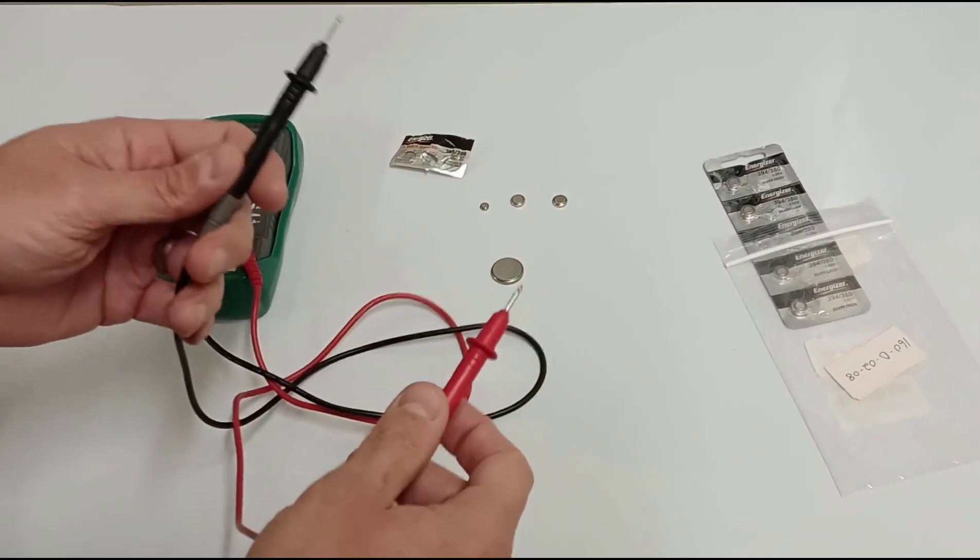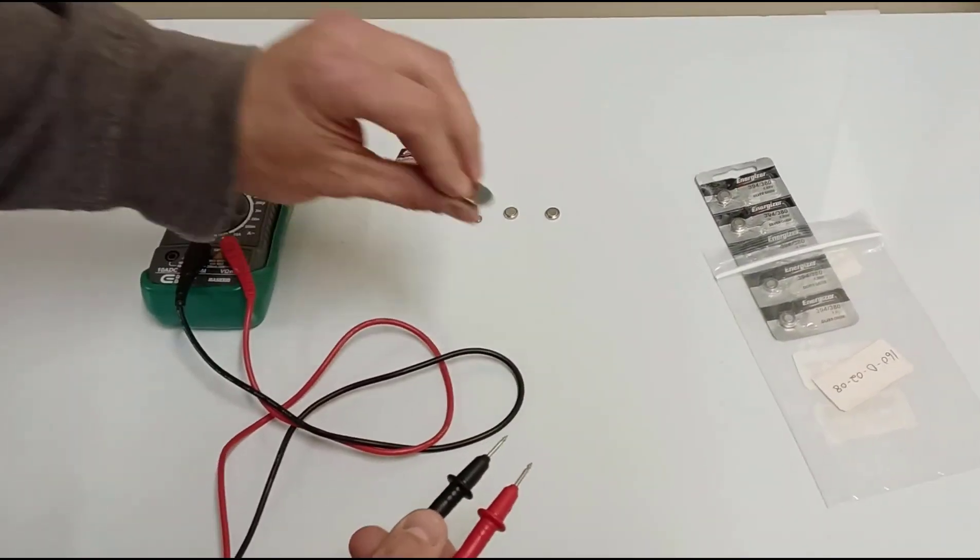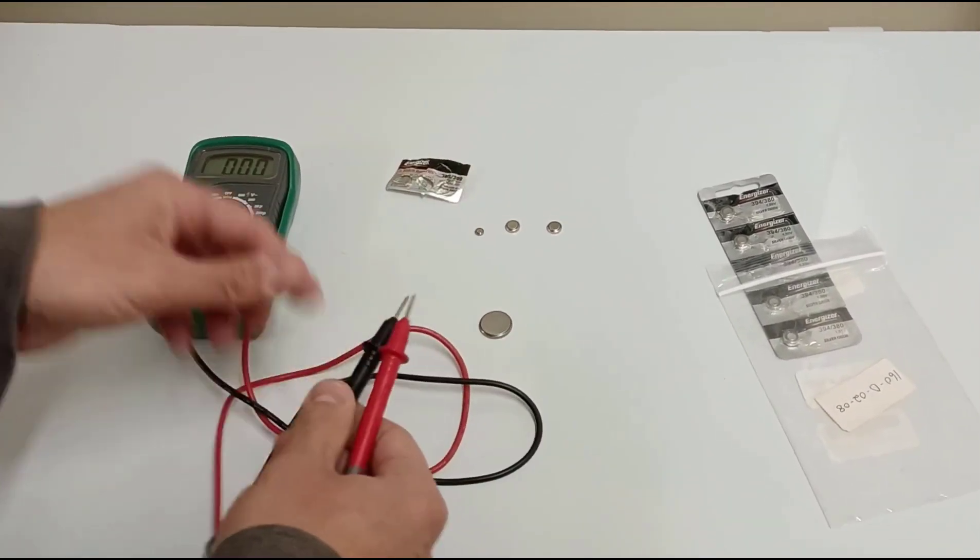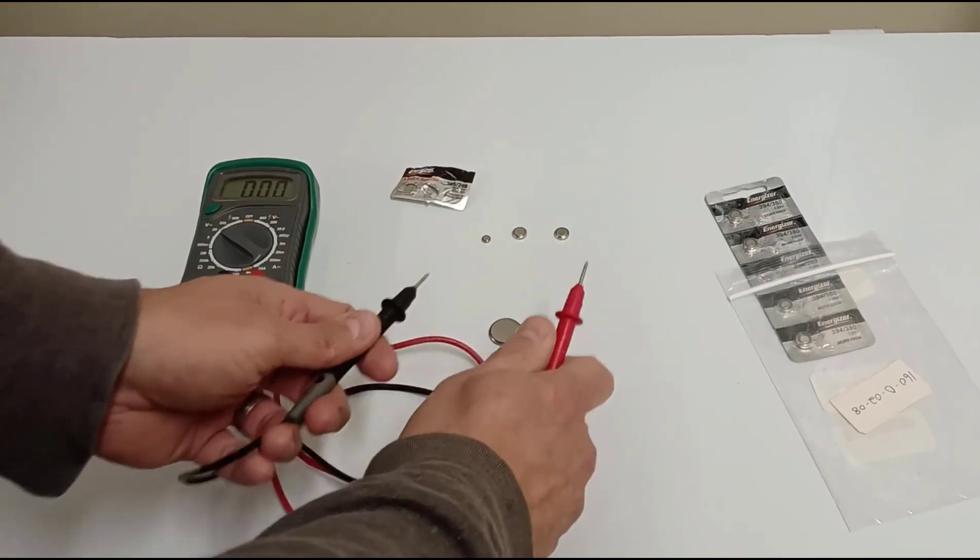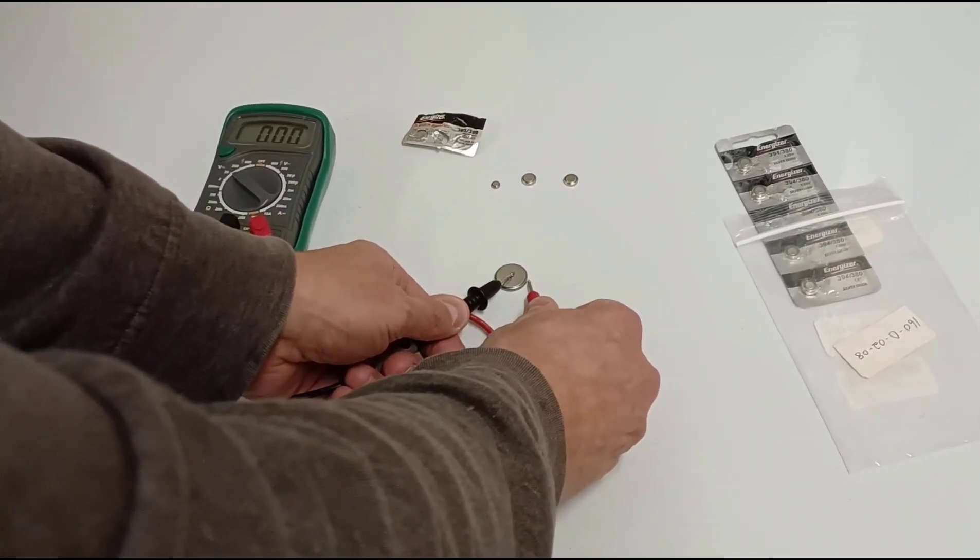The black one's going to go to the negative, the red's going to go to the positive. On any of these watch batteries, you'll see on the back is a plus sign. To test it, I'm going to touch the black here and the red here to the side.